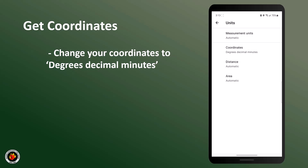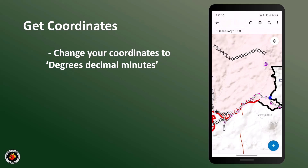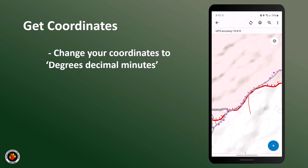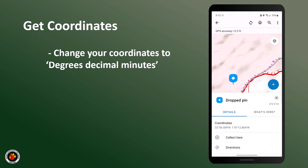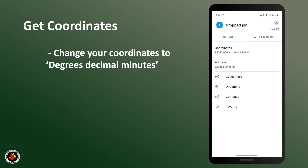Navigate back to your map. Let's gather coordinates by dropping a pin. Dropping a pin allows you to gather information about a location without having to add a point or edit the map. To drop a pin, hold your finger down on the area you would like to gather coordinates. After a second, your pin is dropped. You can now view information for that pin, including the coordinates.